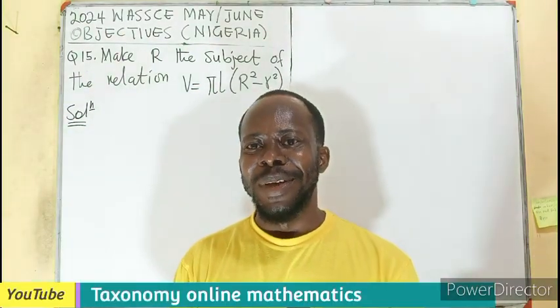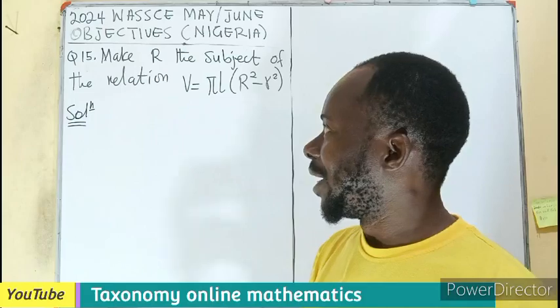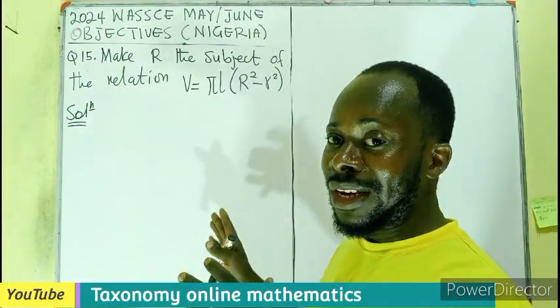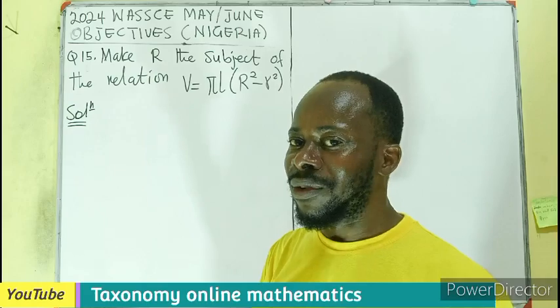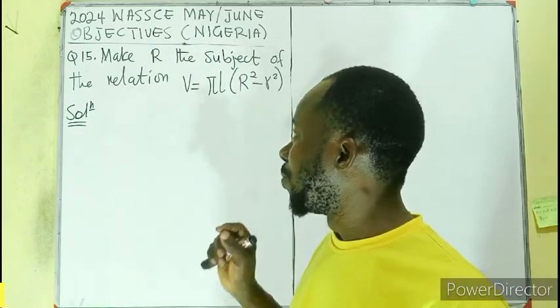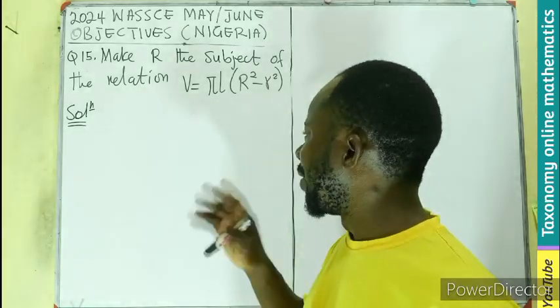Hello, welcome. We have question number 15 on change of subject. We are solving questions from Nigerian 2024 WASCE. We need to make R the subject of the relation V equals π L into bracket R square minus r square.